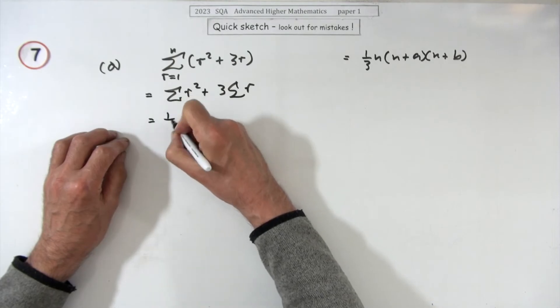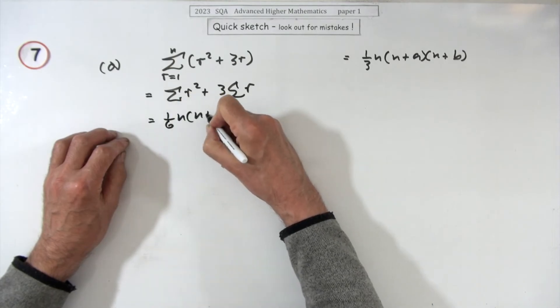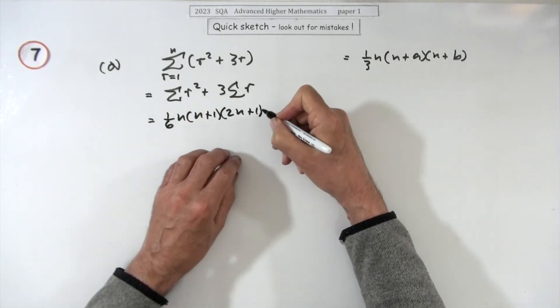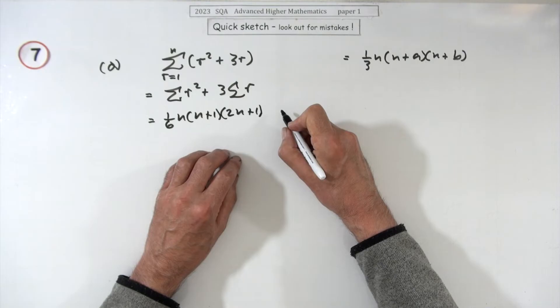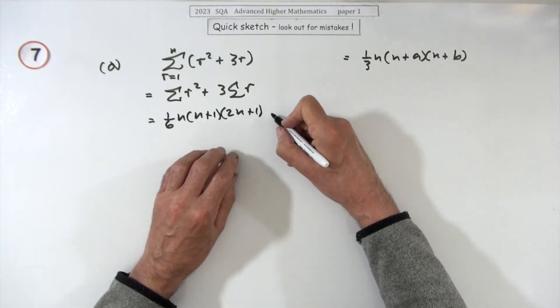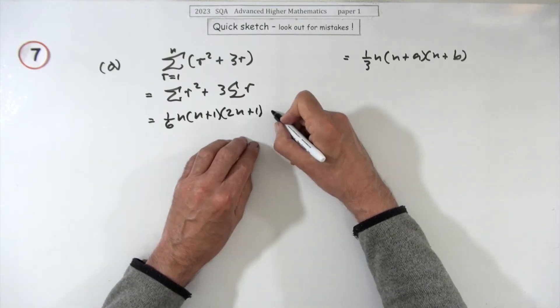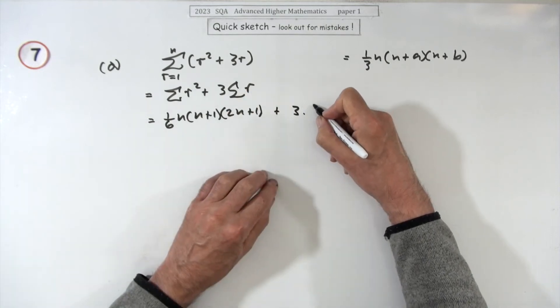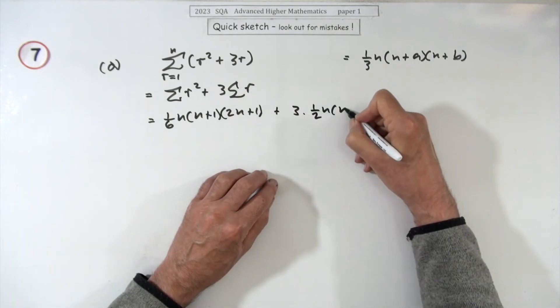That's that petrol hedge trimmer finally stopped, I think they've got their petrol lawnmower out now. Plus three lots of, and that one becomes a half of n, n plus one.